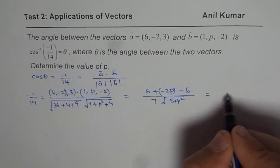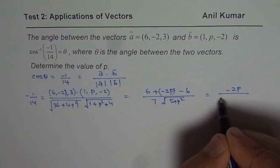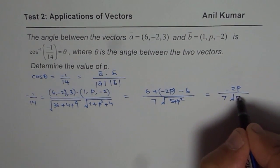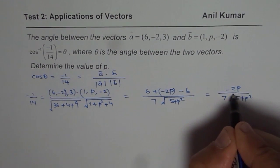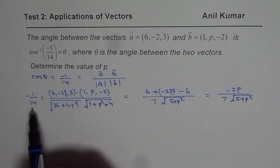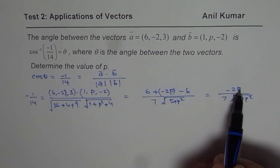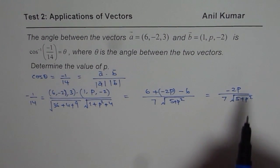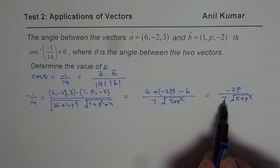Now this simplifies to -2p over 7 times square root of 5 plus p squared. So we have -1 over 14 equals to -2p over 7 times this. So we can just cross multiply and then find the value of p. Let us first cross multiply.